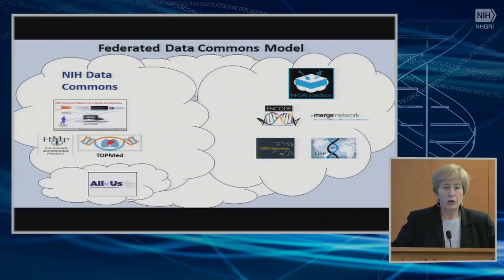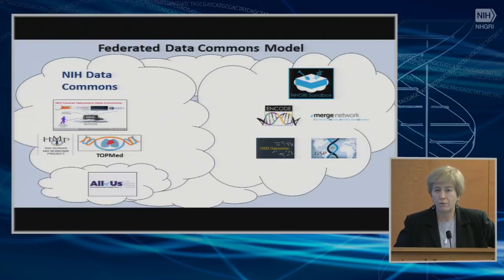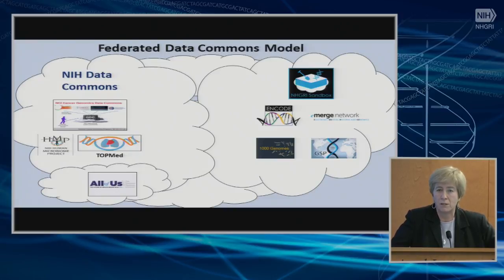We've been talking about what type of data sets to initially populate the sandbox. These are just proposals — not written in stone — and the data sets will increase and change over time. We thought that ENCODE data, data from the eMERGE network, data from the 1000 Genomes Project, and data from the genomic sequencing program would be good data sets to start with. At the same time, multiple NIH data commons are emerging: NCI Genomic Data Commons, one from HMP, one for human microbiome project data, and others.